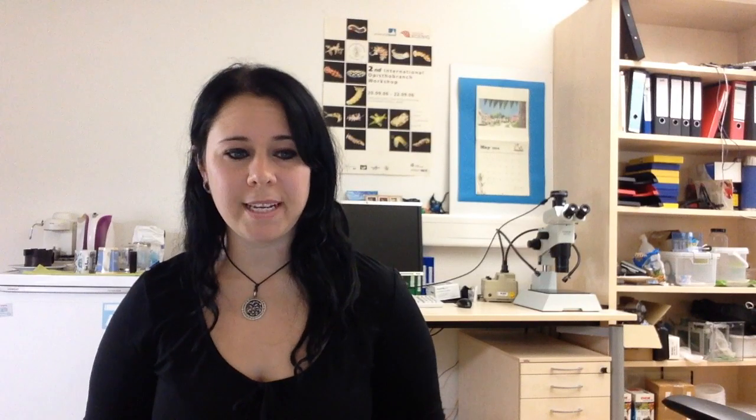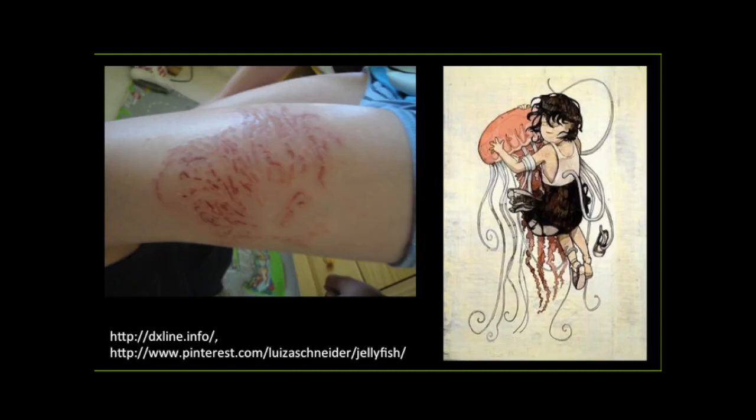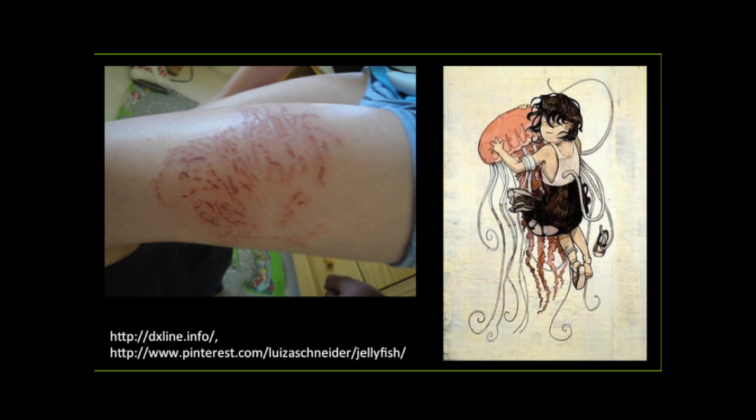A third group eats cnidarians, otherwise known as jellyfish and their cousins. The group Cnidaria is defined as having stinging cells called nematocysts or cnidocysts — these cells are responsible for making jellyfish hugs painful. When a slug puts its mouth around a polyp, it gets stung, but it still eats the polyp, stinging cells and all.